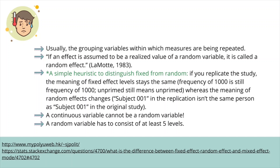A simple heuristic to distinguish fixed effects from random effects: if you replicate a study, the meaning of fixed effect levels stays the same. For example, a frequency of 1,000 is still a frequency of 1,000, and an AOA of 3 is still AOA of 3. Whereas the meaning of random effects changes from one study to another — subject 1 in one study is not the same as subject 1 in another study, and the words used in one study differ from those in a replication.